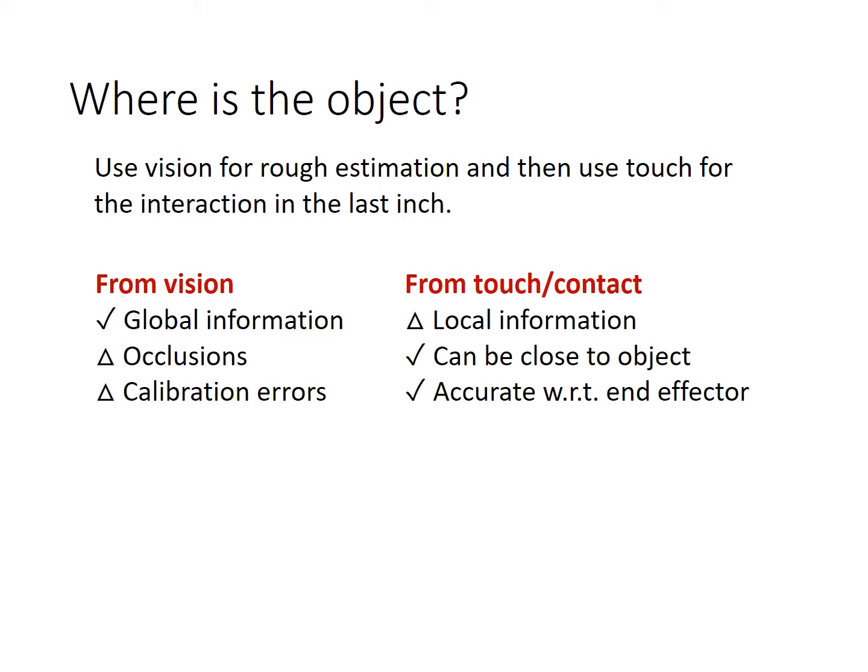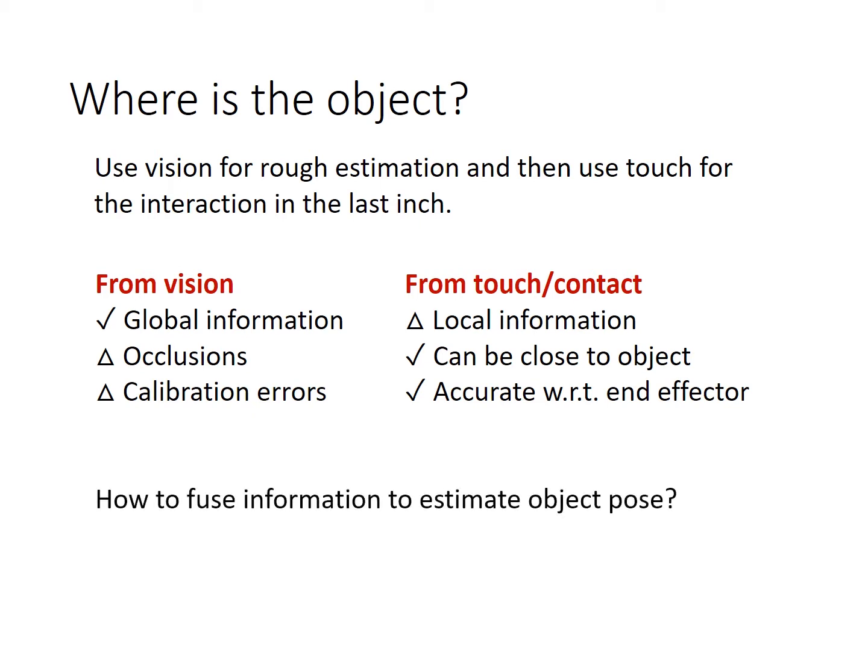Comparing vision versus tactile sensing: visual sensors provide rich and global information, but when occlusion exists, vision is of little use. In addition, intrinsic and extrinsic calibration errors also make the information inaccurate. On the other hand, tactile sensors provide only local information, but they can be close to the object and the measurement is accurate with respect to the robot fingers. Vision and tactile information complement each other well, so we would like to find an efficient algorithm to combine them.